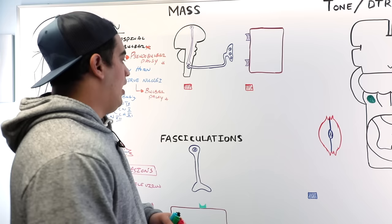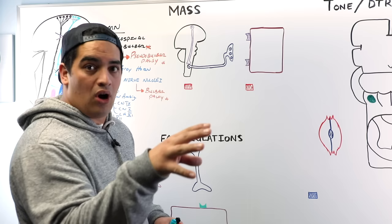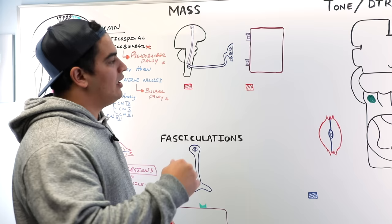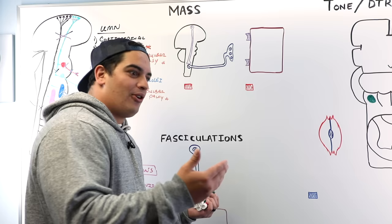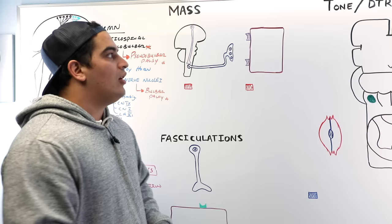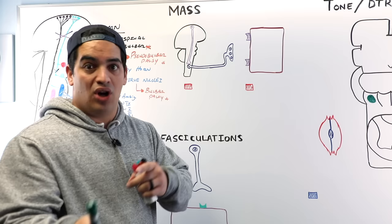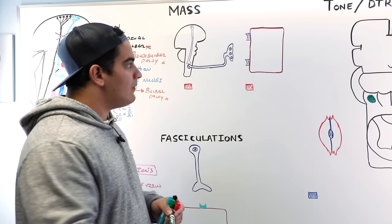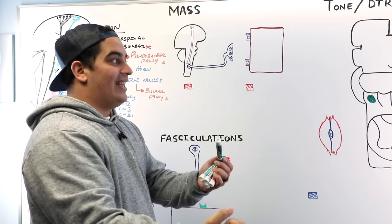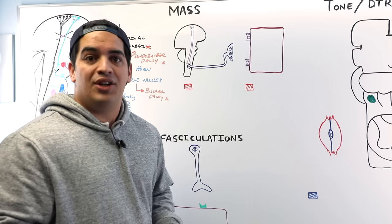Now, instead of simply memorizing a chart, let's understand why each characteristic differs between upper and lower motor neuron lesions. Starting with muscle mass: in both lesion types there is a decrease in mass, but the degree differs significantly. We need to understand why each type leads to atrophy and how the mechanisms differ.